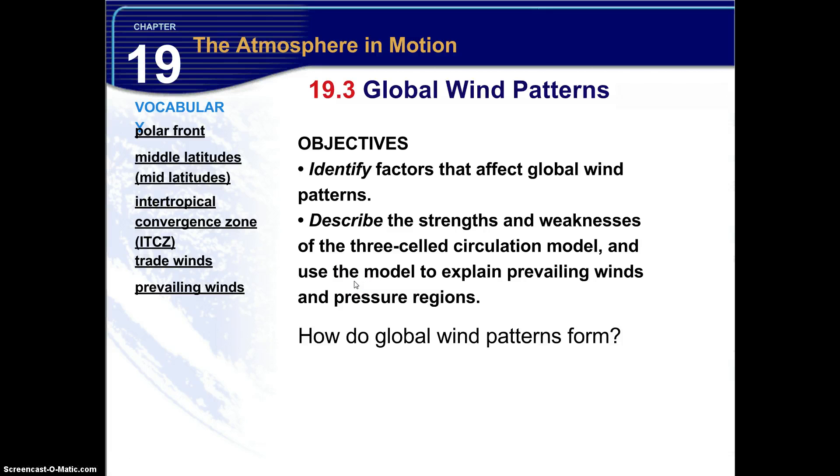We're going to begin 19.3 Global Wind Patterns. We have two objectives for this section. Identify factors that affect global wind patterns. Describe the strengths and weaknesses of the three-celled circulation model. And use the model to explain prevailing winds and pressure regions.